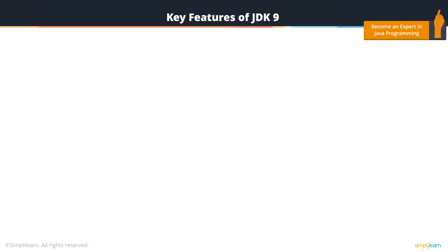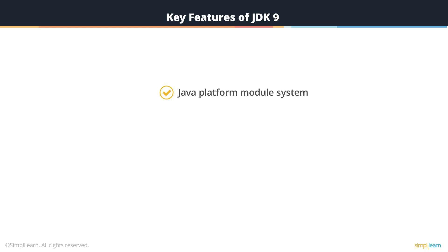JDK 9 has been released recently, and it seems promising with respect to new features and abilities. Here are some of the features. The first one is the Java Platform Module System, which allows strong encapsulation and declares explicit dependencies. Next, JShell — with the help of JShell, one can directly start writing code on the console and execute it.